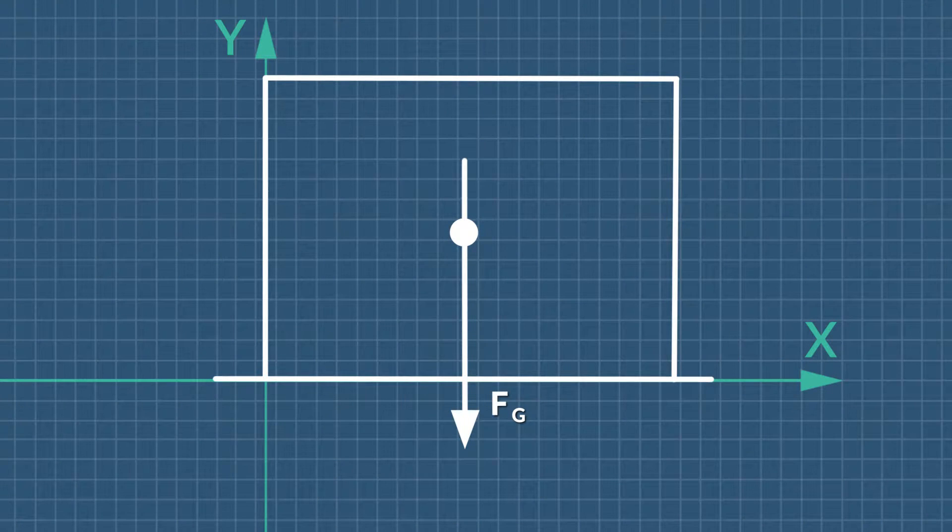There's gravity pulling the box down and the normal force acting up from the surface. Do you know how long the arrows should be? To figure it out, look at the Y axis and ask yourself, are there any forces accelerating in the Y direction? If not, the forces are equal in magnitude. So the arrows should be the same length.